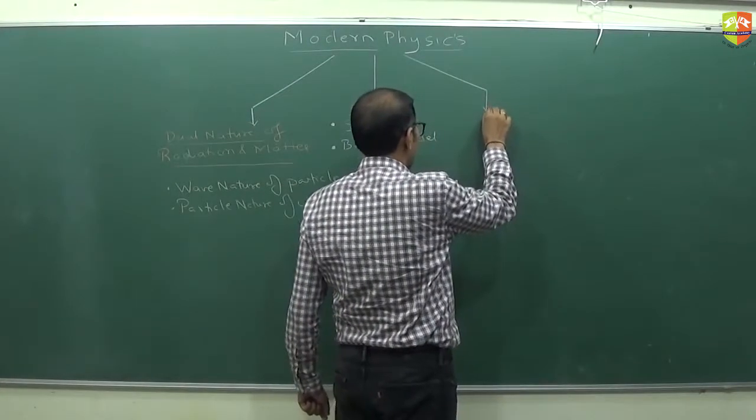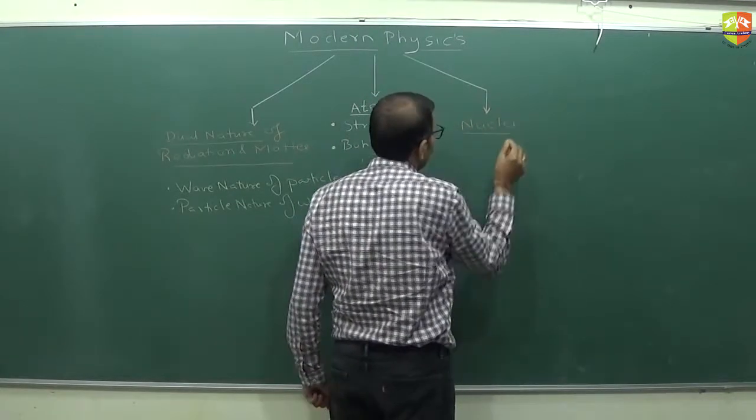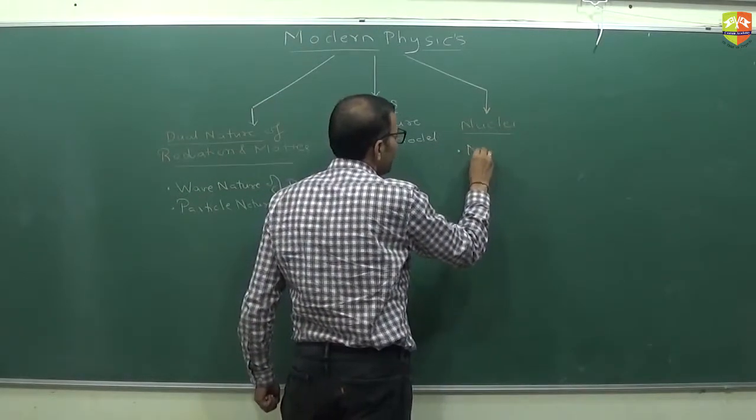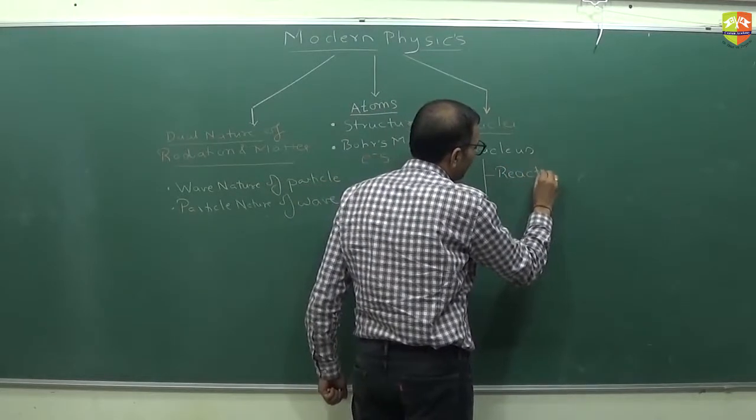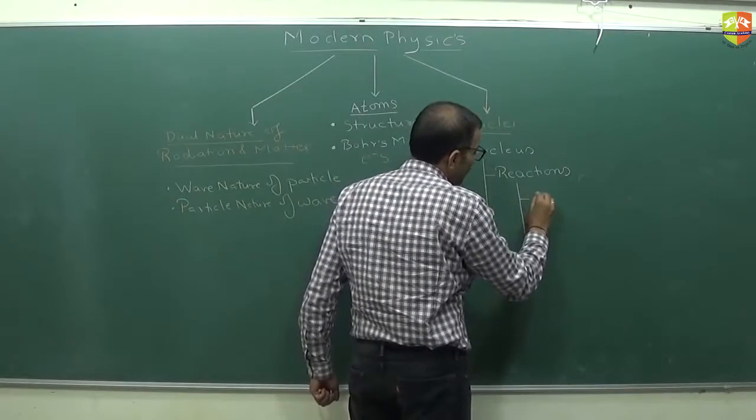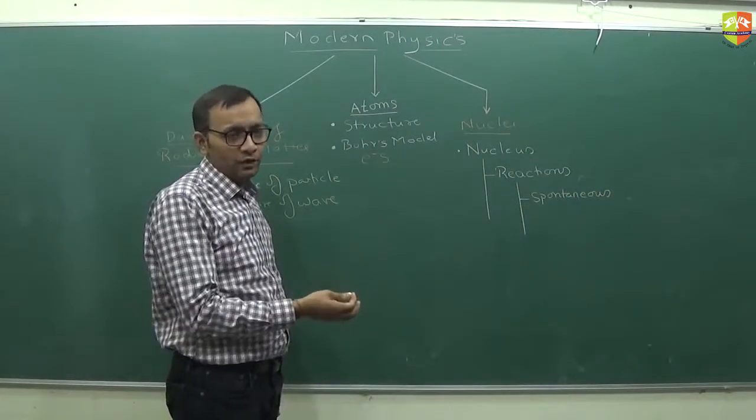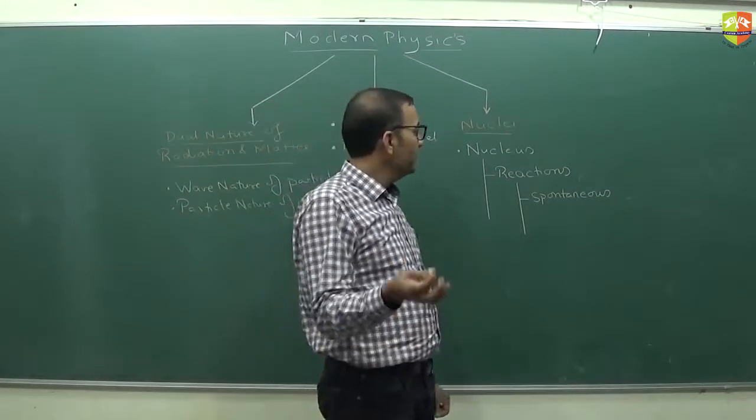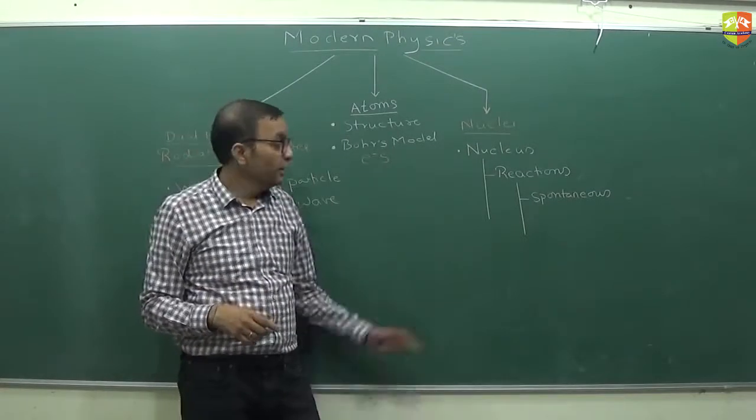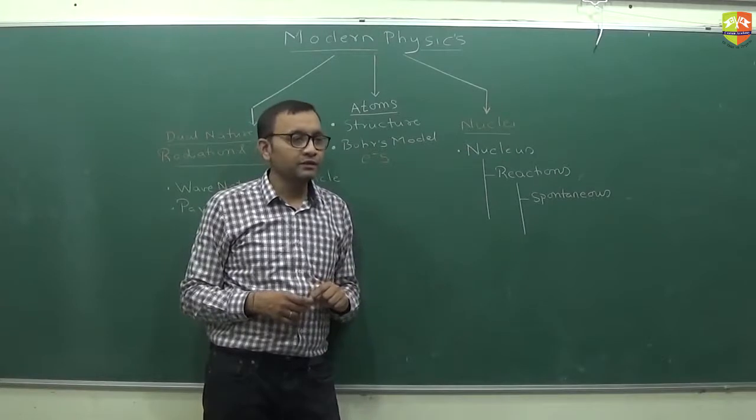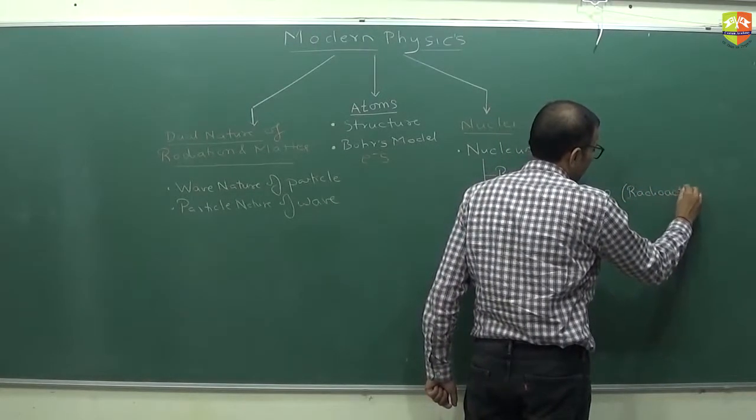The last section or the last chapter in this is nuclei. In nuclei chapter, our focus is nucleus. Nucleus, the reactions it undergoes. There can be spontaneous reactions. Like, in chemical reactions also, we have dealt with spontaneous reactions. What is the difference between chemical reaction and this reaction? Chemical reaction involves exchange or sharing of electrons. Here, nucleus takes part in the reaction. That is why we call it nuclear reactions.